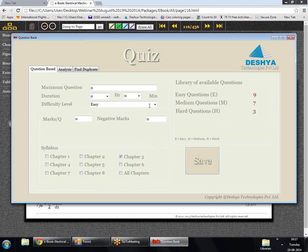I'll just choose the easy option for today's quiz and set the maximum number of questions to five. I can assign four marks for correct answer and one mark will be deducted for wrong answer. I can also set the duration of the quiz, maybe five minutes. So I save it.